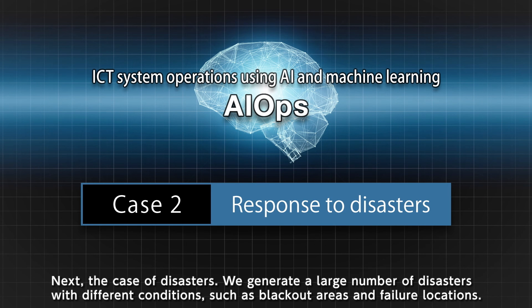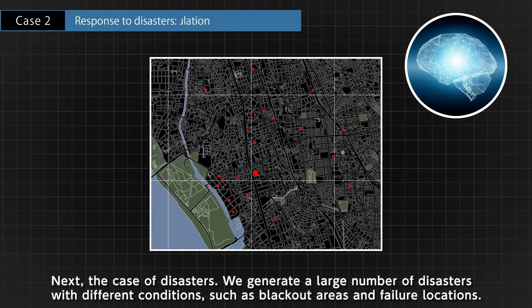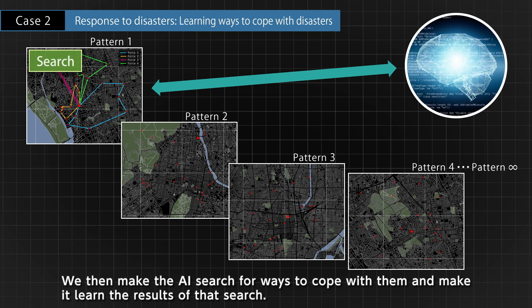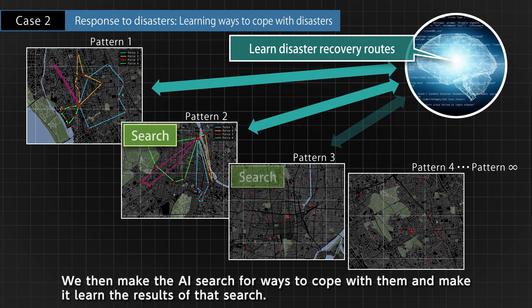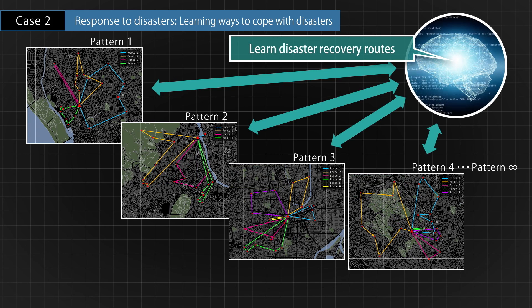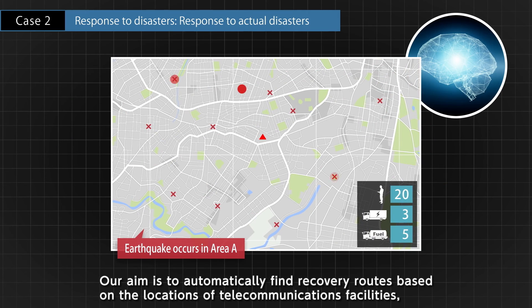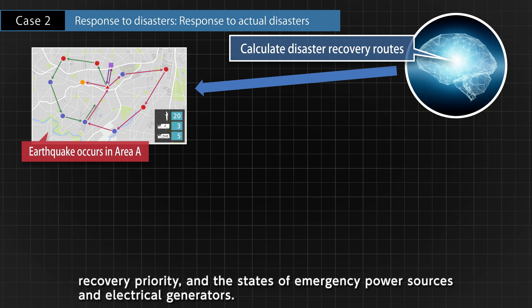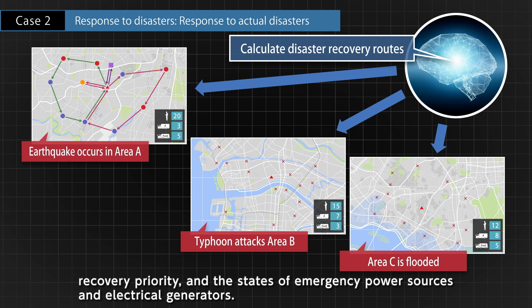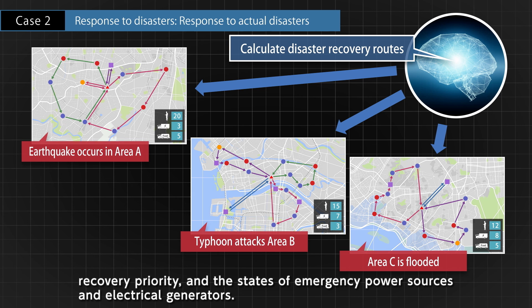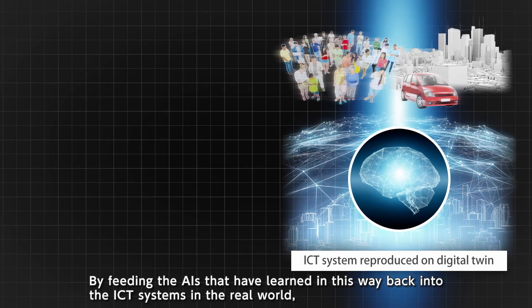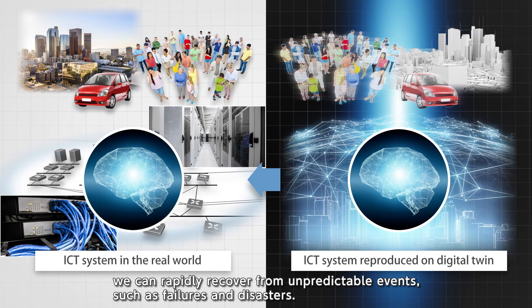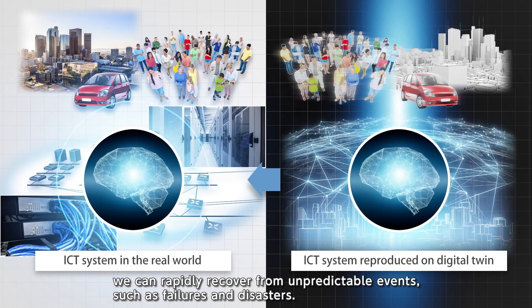Next, the case of disasters. We generate a large number of disasters with different conditions, such as blackout areas and failure locations. We then make the AI search for ways to cope with them and learn the results of that search. Our aim is to automatically find recovery routes based on the locations of telecommunications facilities, recovery priority, and the states of emergency power sources and electrical generators. By feeding the AIs that have learned in this way back into the ICT systems in the real world, we can rapidly recover from unpredictable events such as failures and disasters.